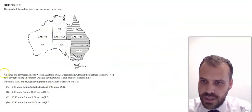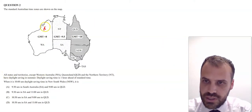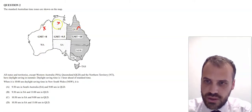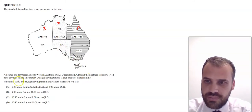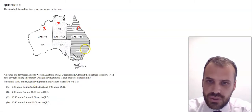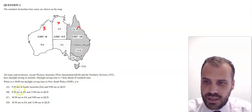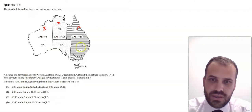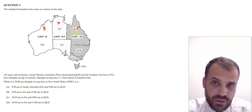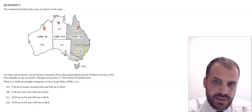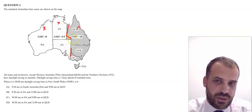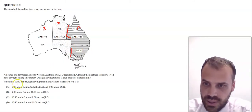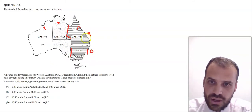Question two is about time zones. All states and territories except Western Australia, Queensland, and Northern Territory have daylight savings — so South Australia, New South Wales, Victoria, and Tasmania have daylight savings. Daylight savings time is one hour ahead of standard time. When it is 10 a.m. daylight saving time in New South Wales, New South Wales is one hour ahead of Queensland, so it'll be 9 a.m. in Queensland.